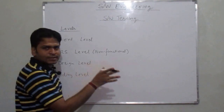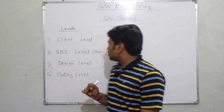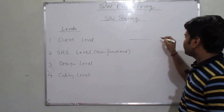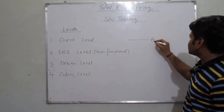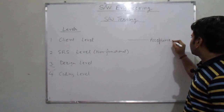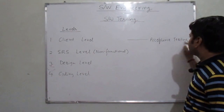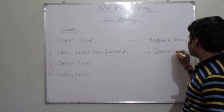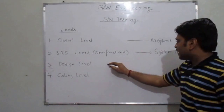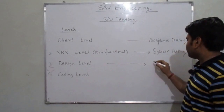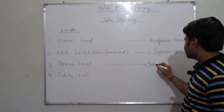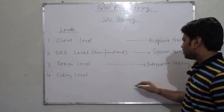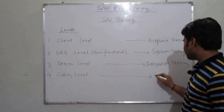Corresponding to these levels, we have certain testing. At the client level we perform acceptance testing. At the SRS level we perform system testing. At the design level we perform integration testing. And at the coding level we perform unit testing.